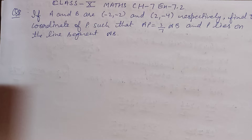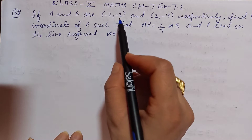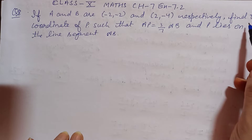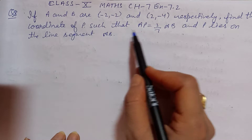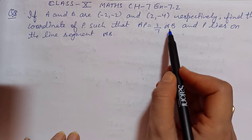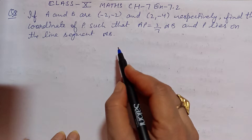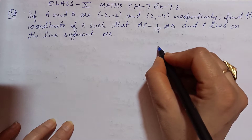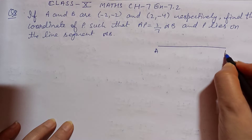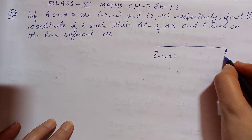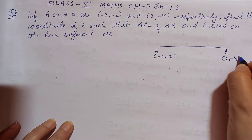Hello students, today we start Class 10 Math Chapter 7, Exercise 7.2, Question 8. If A and B are (-2, -2) and (2, -4) respectively, find the coordinate of P such that AP is equal to 3/7 AB and P lies on the line segment AB. You have a line segment with A and B. A coordinate is (-2, -2) and B coordinate is (2, -4).